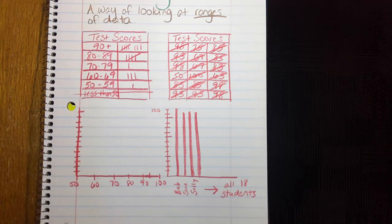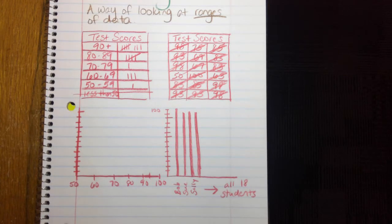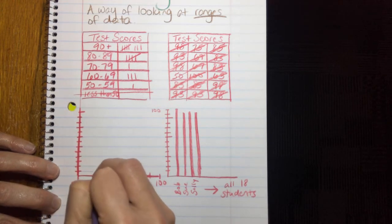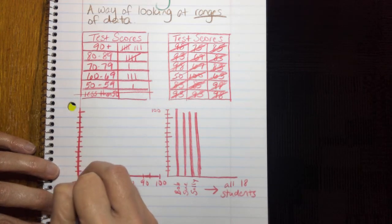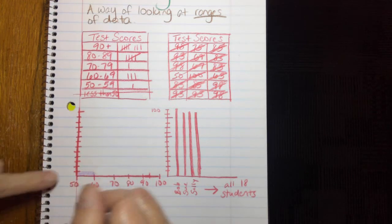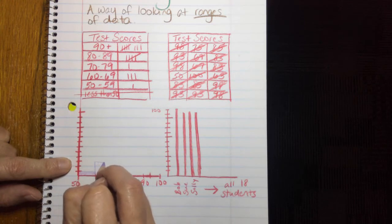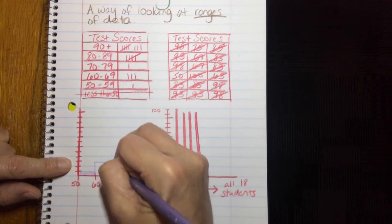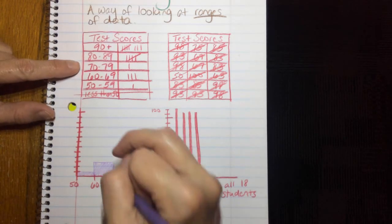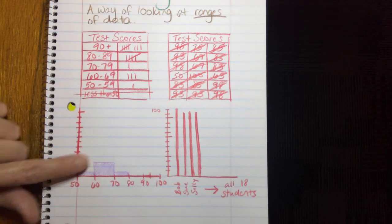So here's what I'm doing with this graph. Now, 1 kid made between 50 and 59. So I can make this bar look like a range from 50 to 59, right before 60. And there's my 1 kid. Now, 3 kids made from a 60 to a 69, right at 70. And 1 kid made between a 70 and a 79.